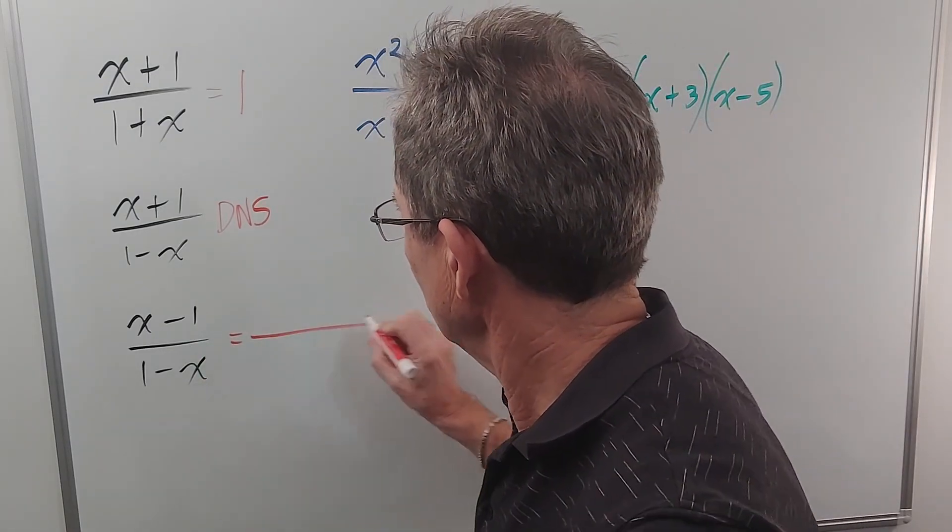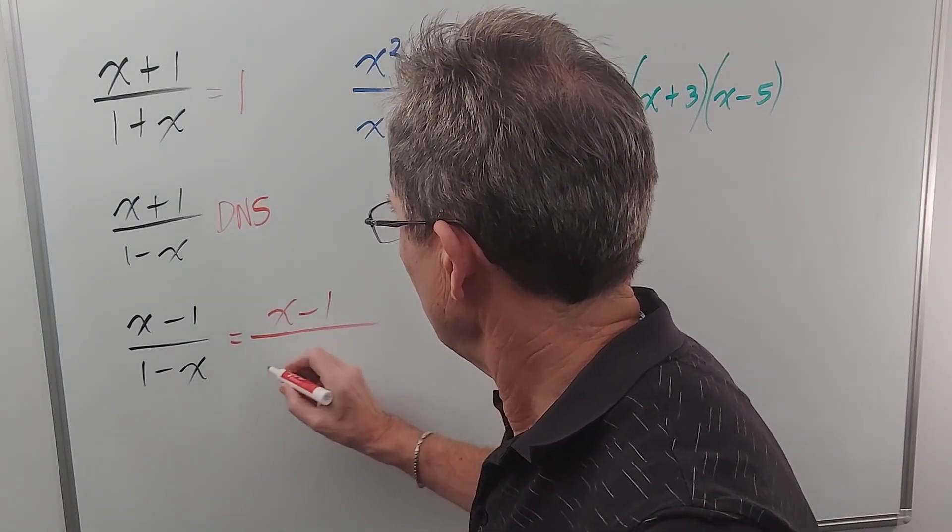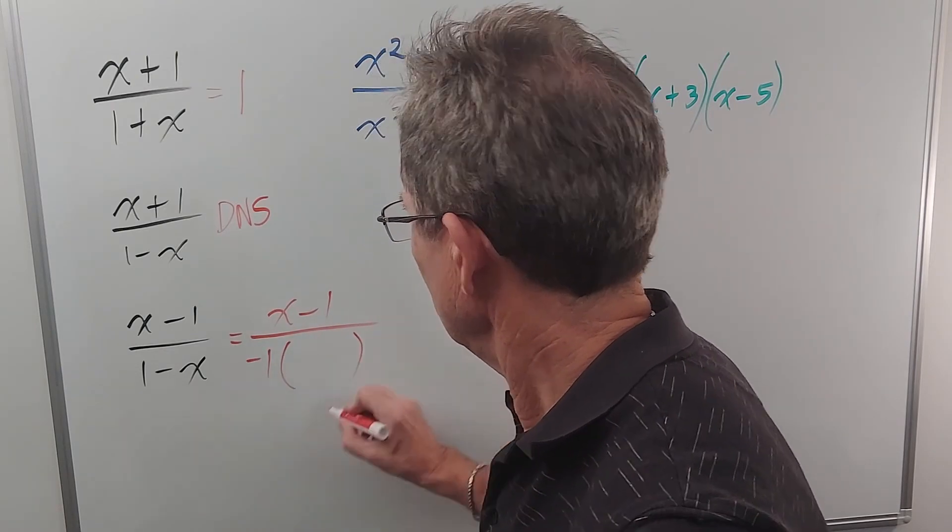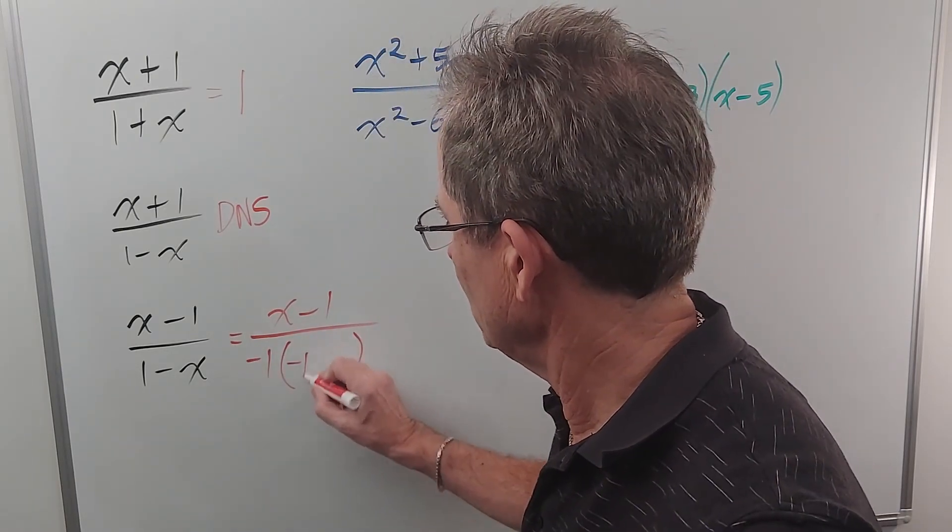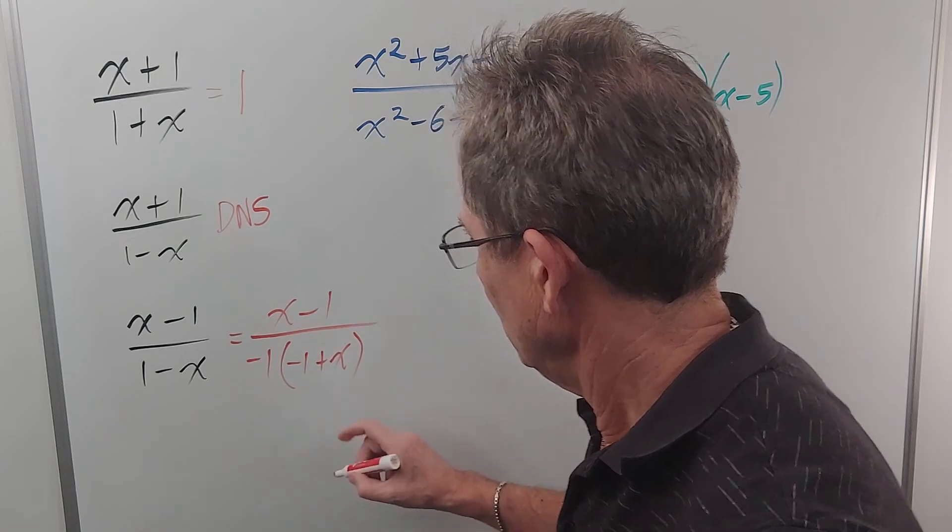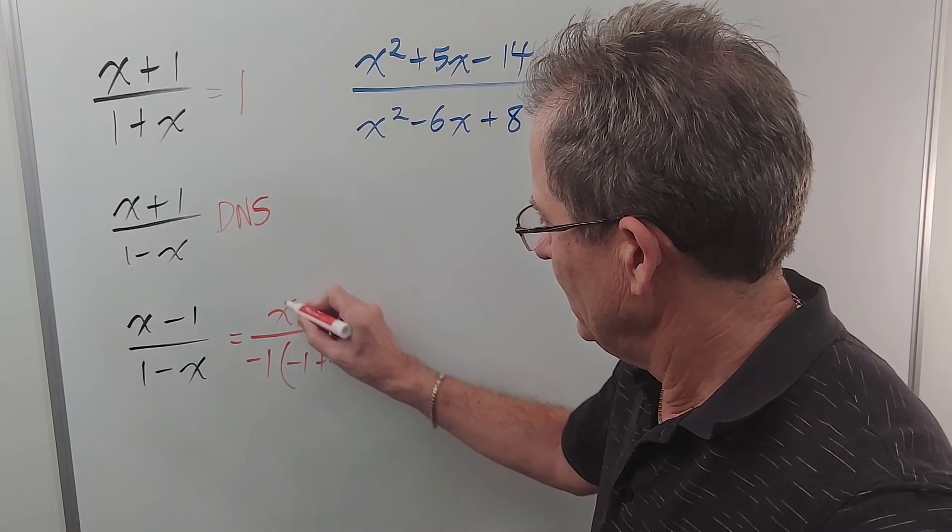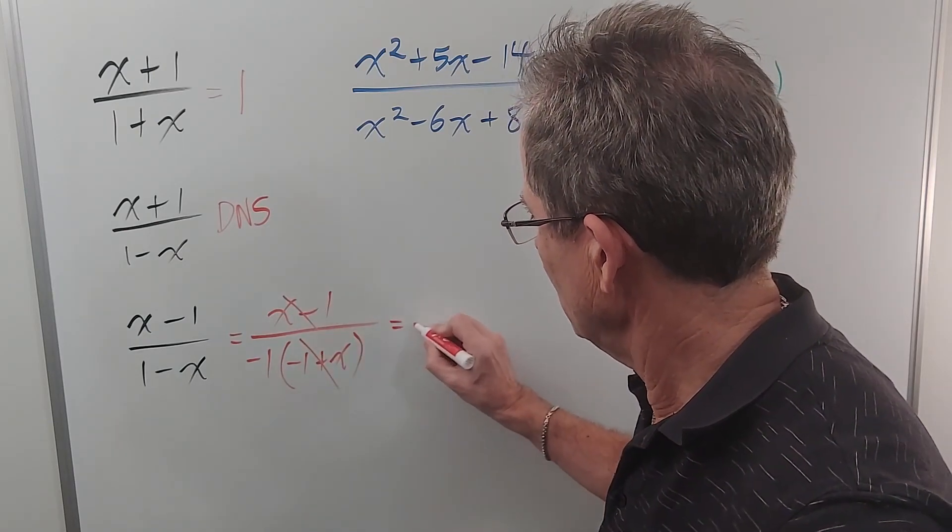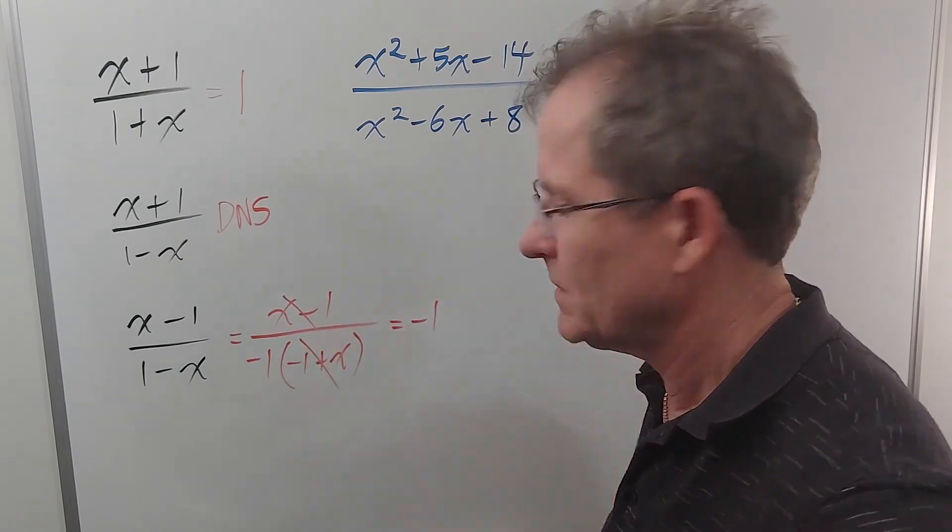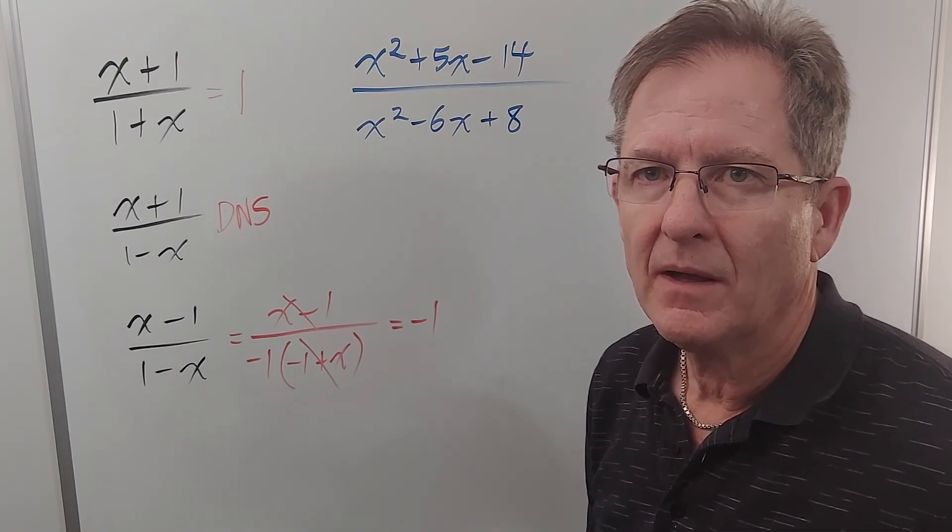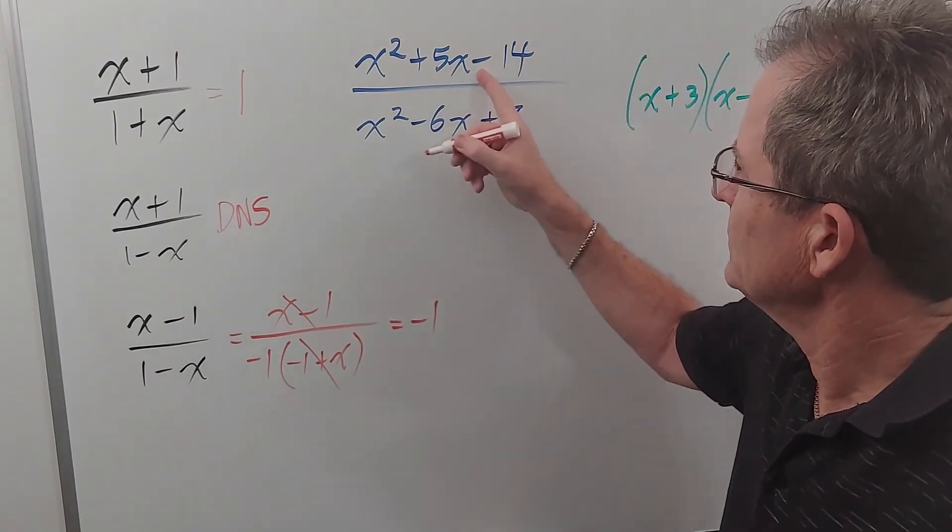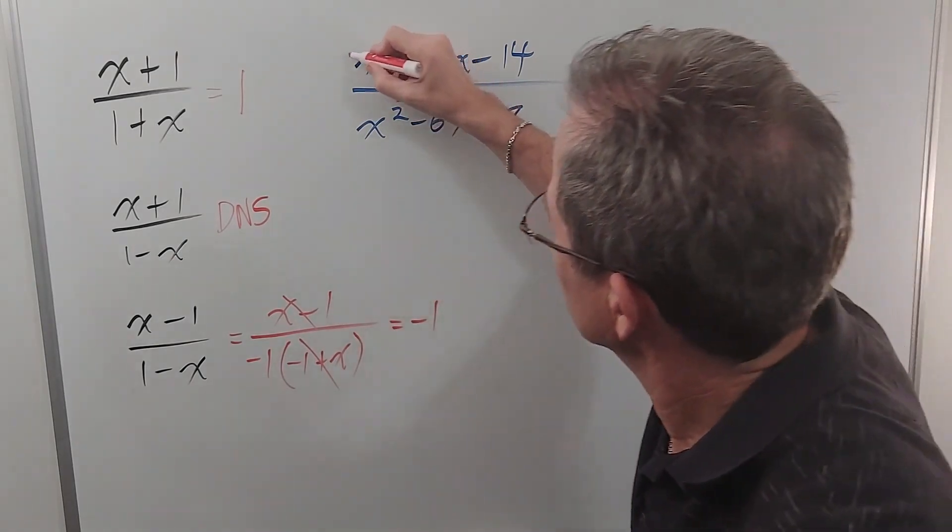We can actually simplify this if we factor out a negative one from the denominator, leaving us with negative one plus x. Now negative one plus x is the same as x minus one, so these cancel and you just get one over negative one, which is negative one. Okay, how about this one? These are called simple trinomials because those are both ones.